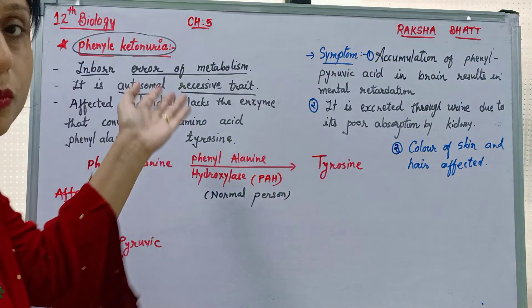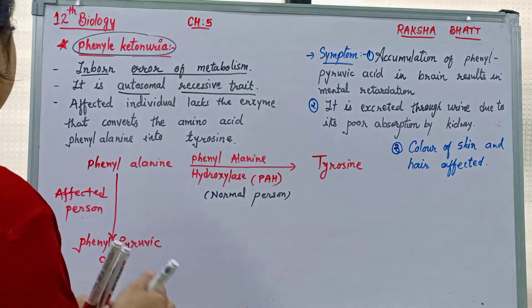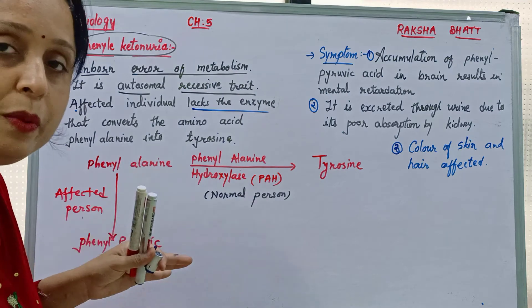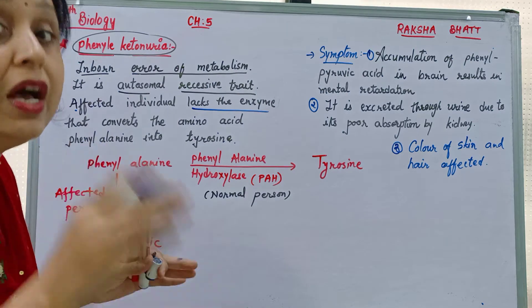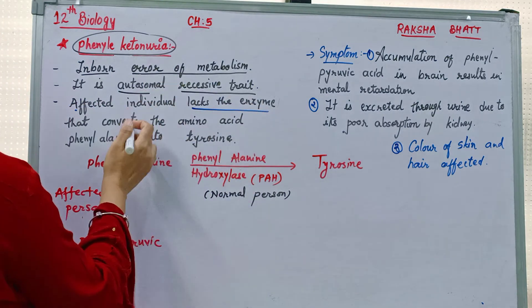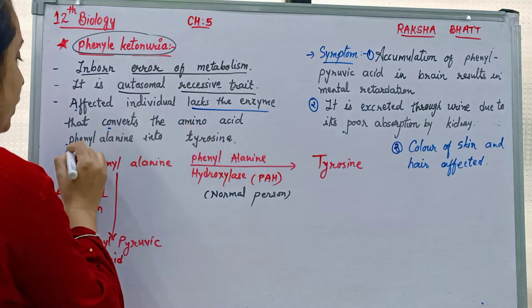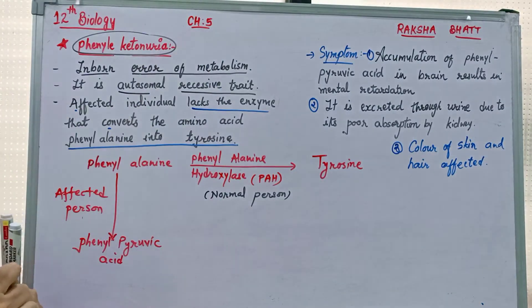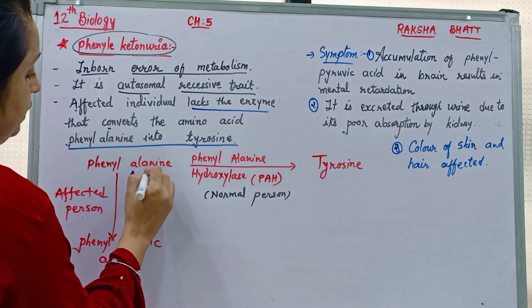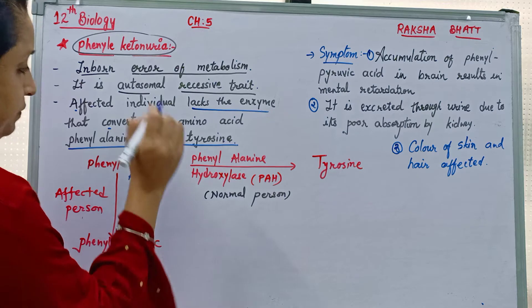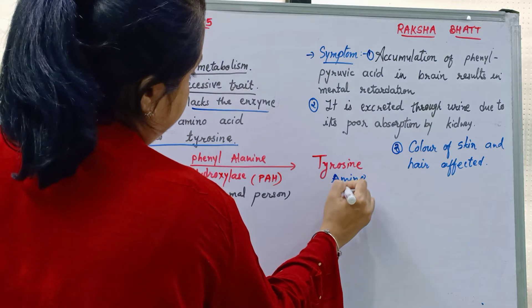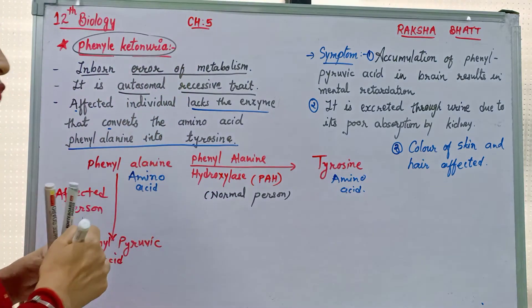Second point: it is an autosomal recessive disorder. The affected individual lacks the enzyme that converts the amino acid phenylalanine into tyrosine. There are two amino acids: phenylalanine and tyrosine.